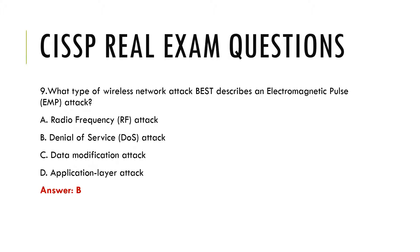Question 9. What type of wireless network attack best describes an electromagnetic pulse? a. Radio frequency, b. Denial of service attack, c. Data modification attack, d. Application layer attack. Answer: b.